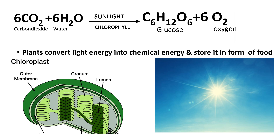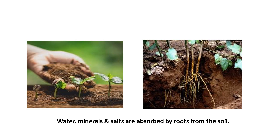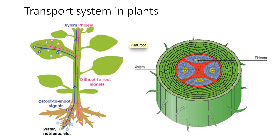Besides leaves, photosynthesis also takes place in other parts like green stems, because of the green color they contain chlorophyll. Water, minerals, and salts — which are nutrients of plants — are absorbed by the roots from the soil and carried to various parts of the plant through tissues called xylem and phloem. Xylem carries water and other minerals from roots to other parts of the plant, whereas phloem transports the food — that is glucose synthesized in the leaves — to other parts. So xylem and phloem play a very important role and are called the transport system of plants.